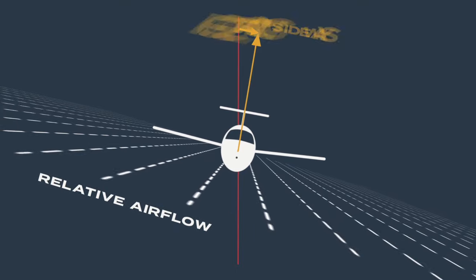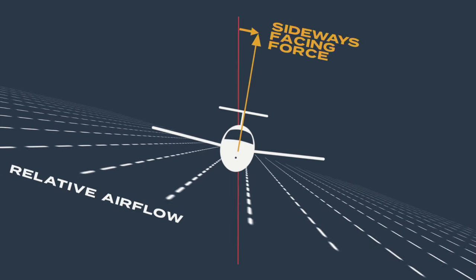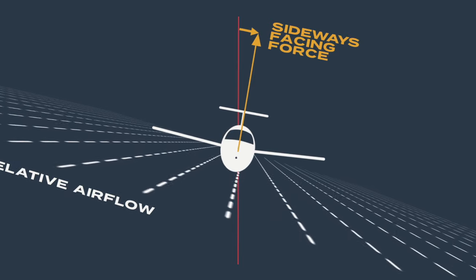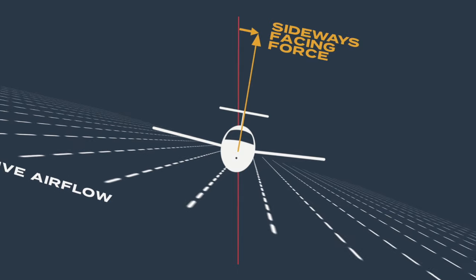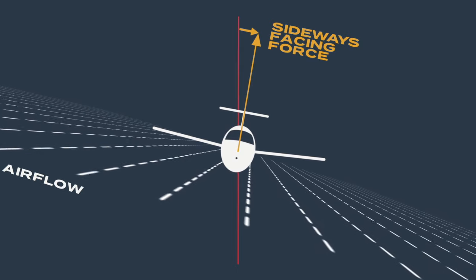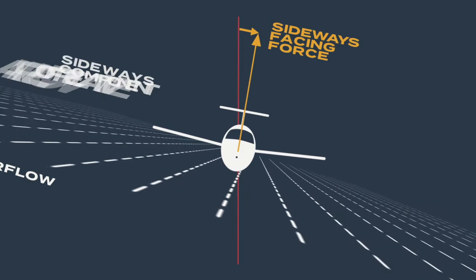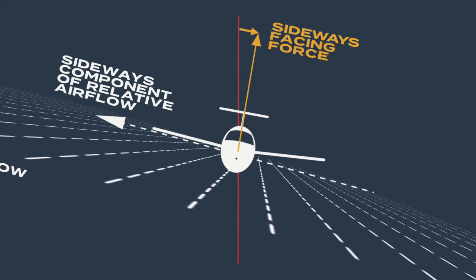It creates a resultant sideways-facing force that makes the aeroplane sideslip in the same direction. As a result of this sideslip, the aeroplane is subjected to a sideways component of the relative airflow.